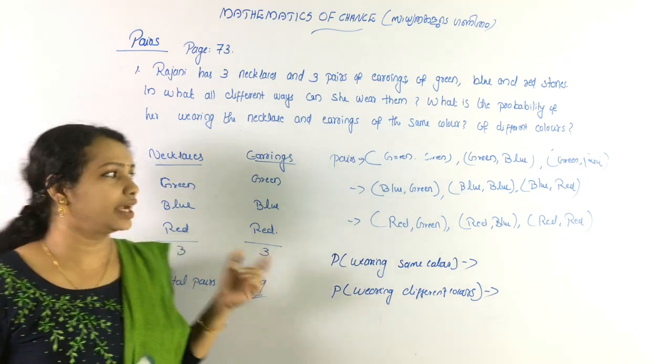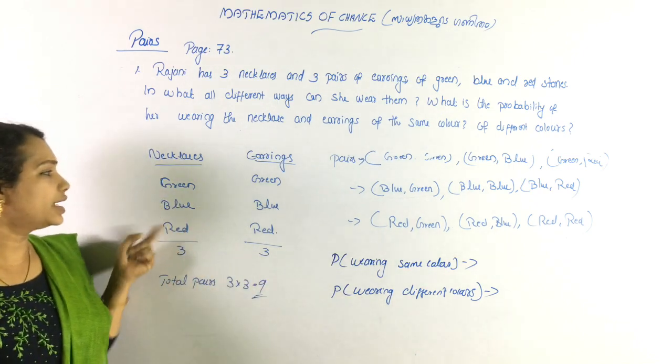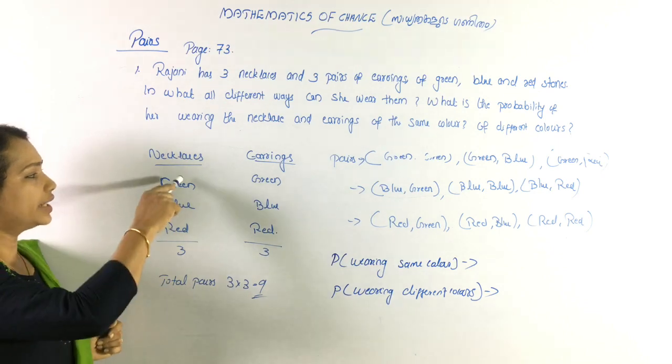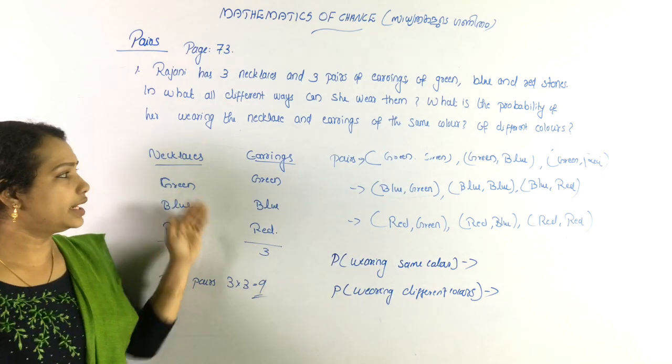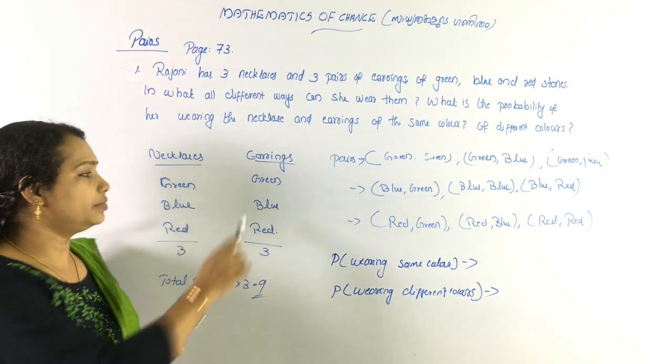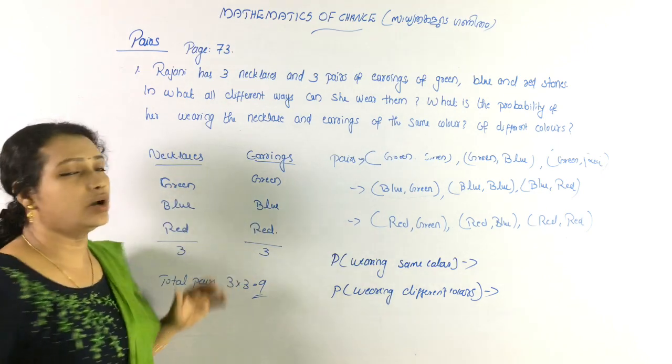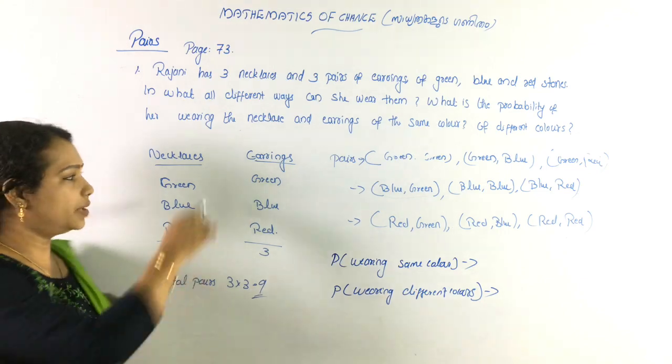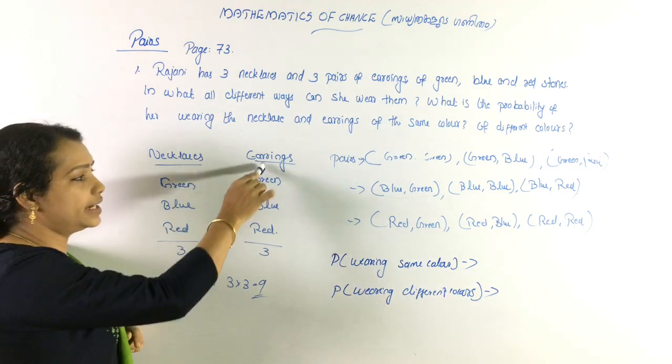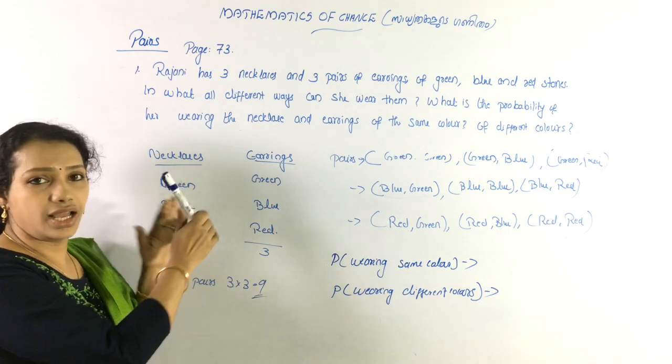The colors are green, blue, red for the necklaces, and green, blue, red for the earrings. We have two sets giving us combinations.